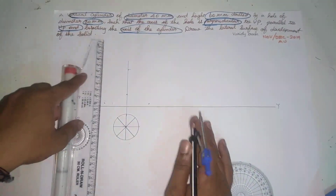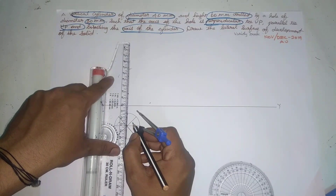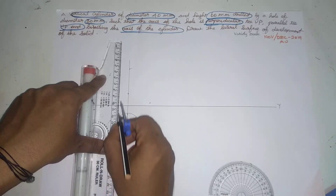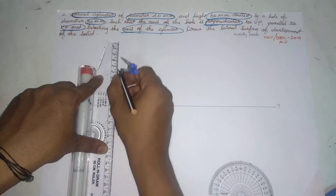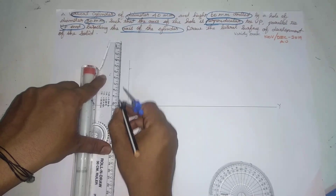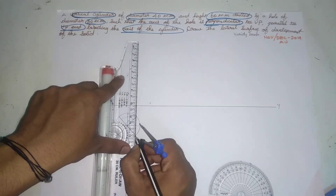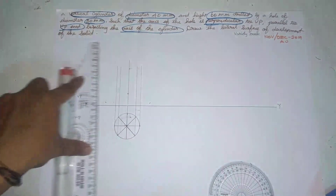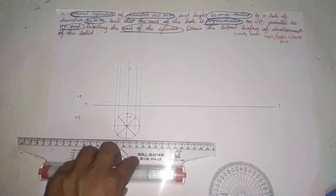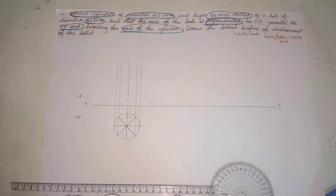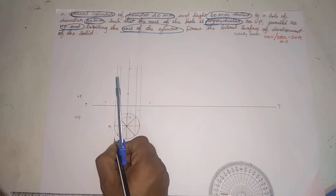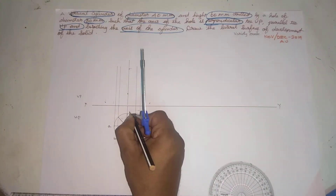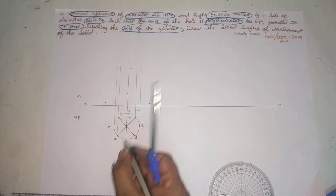We can add the cylinder. We want to mark points on the cylinder. If you have points in the middle of the cylinder, you can label them. A, B, C, D, E, F — and this is my cylinder.